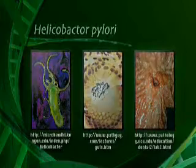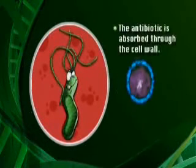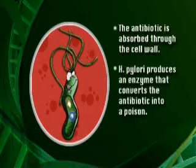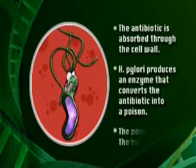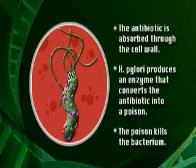So what's really going on here? If we look at the normal version of Helicobacter pylori, when the individual with an ulcer takes antibiotics, the antibiotic is absorbed through the cell wall and interacts with an enzyme that converts the antibiotic into a poison — and that's how this one works. Each antibiotic works a little differently, but in this case it kills the bacterium, which is what you want, and the person is able to get rid of the ulcer.